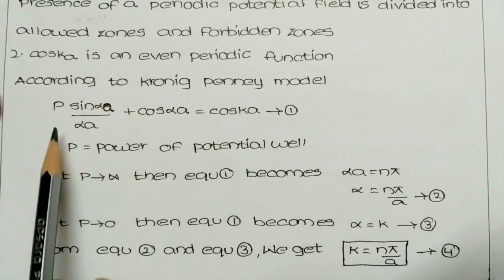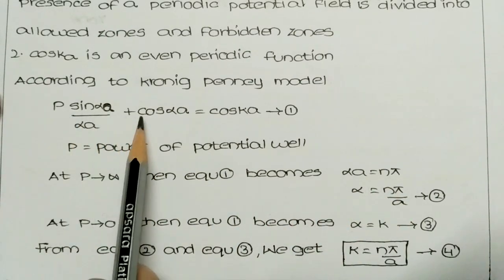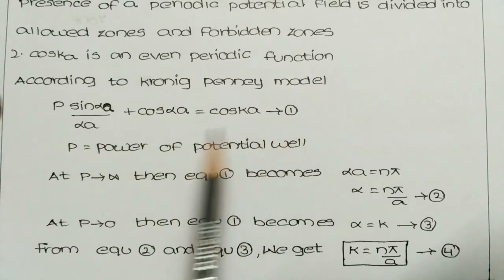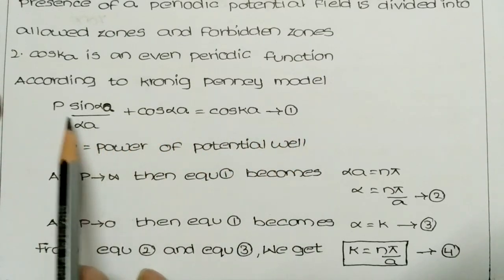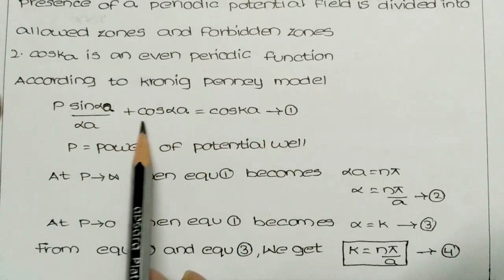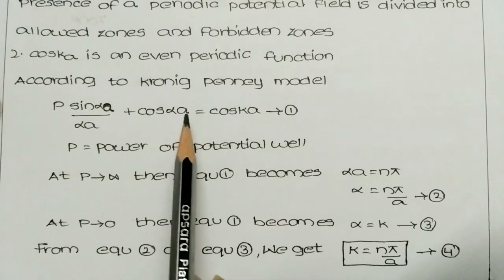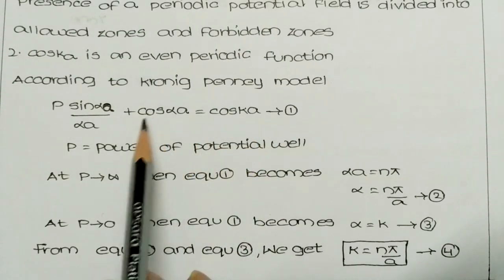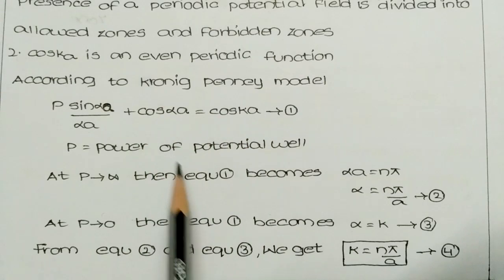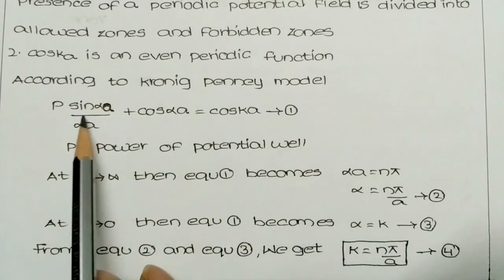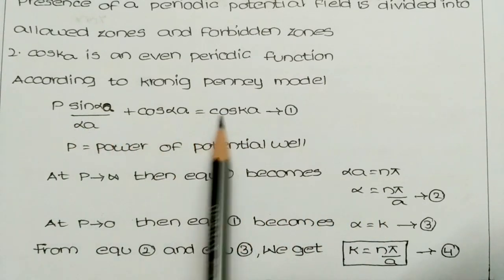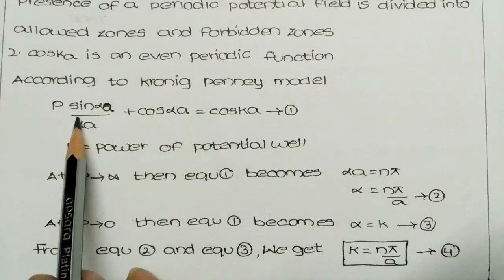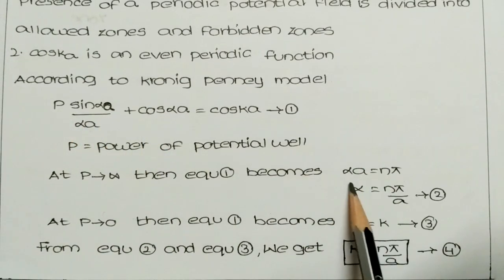When the power of the potential P tends to infinity, the equation becomes αa = nπ, because we divide both sides by P. The P cancels, and cos(αa)/P and cos(ka)/P both go to zero since 1/infinity = 0. Then sin(αa) = 0, which gives αa = nπ.